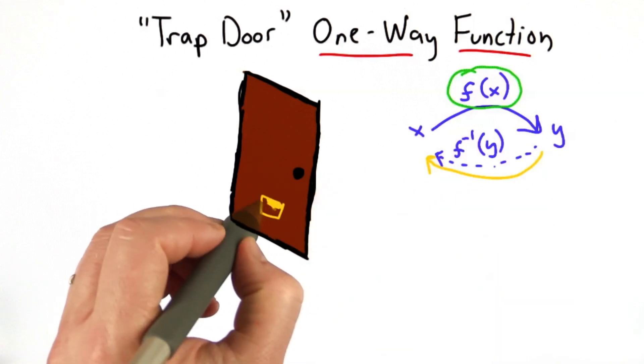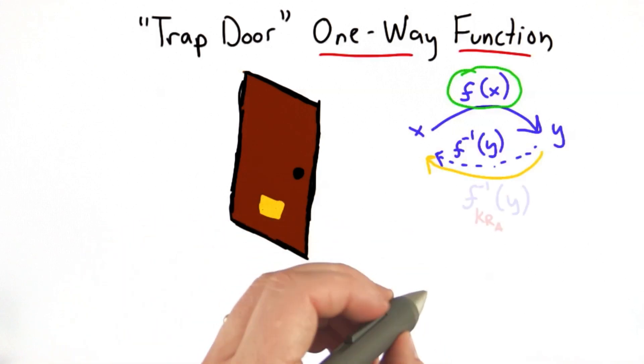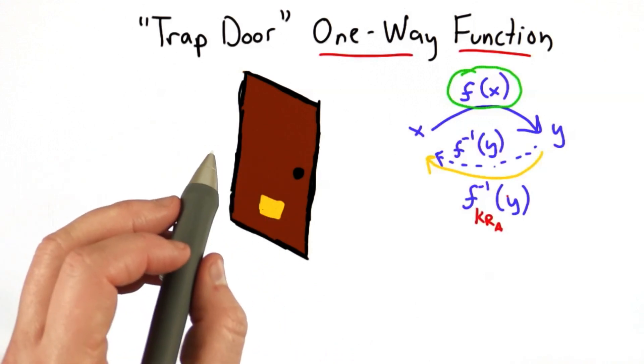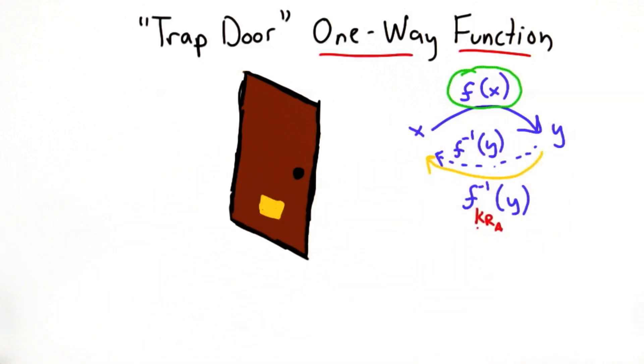We want to be able to, if you have some secret key, you can do the inverse. If you don't, you can't. So that's what makes it an asymmetric crypto system, that it's hard to do in the reverse direction unless you have this extra key.